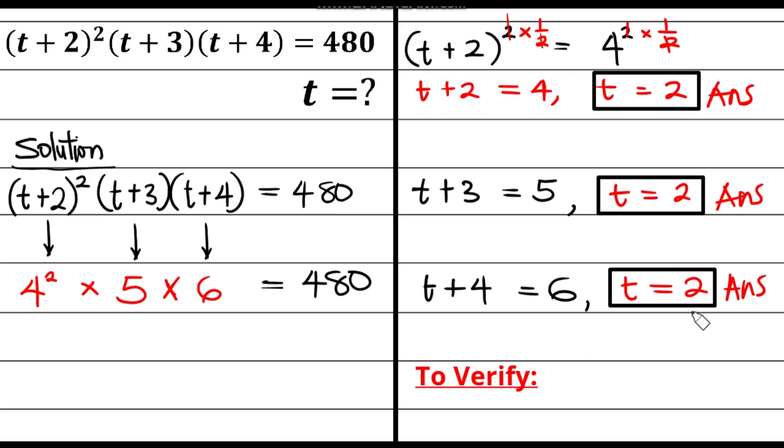Also, we might need to verify this value of t, probably if t equals to 2 is actually correct or not. I am going to insert this value of 2 and see if this left hand side will actually equal the right hand side. If I say 2 here, then 2 plus 2, that is 4 raised to the power, that is square, multiplied by 2 here also, 2 plus 3, that is 5, multiplied by 2 plus 4, that is 6. Then if I multiply all these together, it is just the same thing as what I have here. So it is going to give me 480.